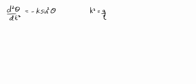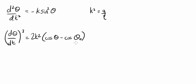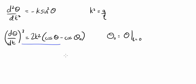It's possible to integrate the equation once to obtain a result for d theta by dt, the angular velocity. In this form of the result, the constant theta subscript 0 refers to the value of theta at the time t equals 0. In fact, this result can also be arrived at directly by an energy argument, in which we calculate the change in kinetic energy and the change in gravitational potential energy and use conservation of energy.